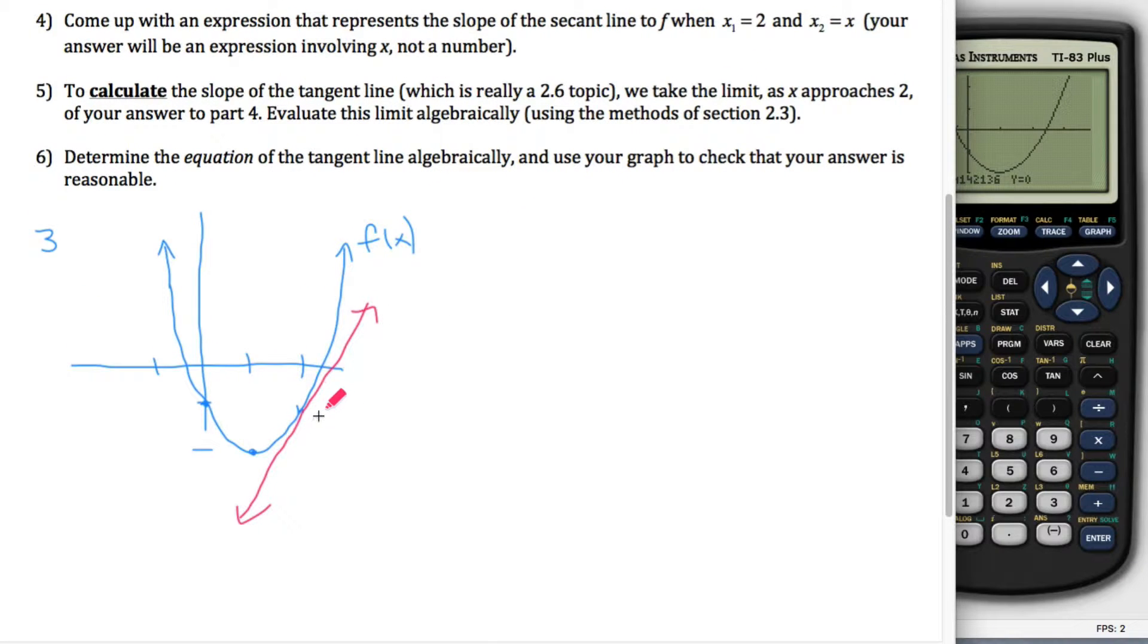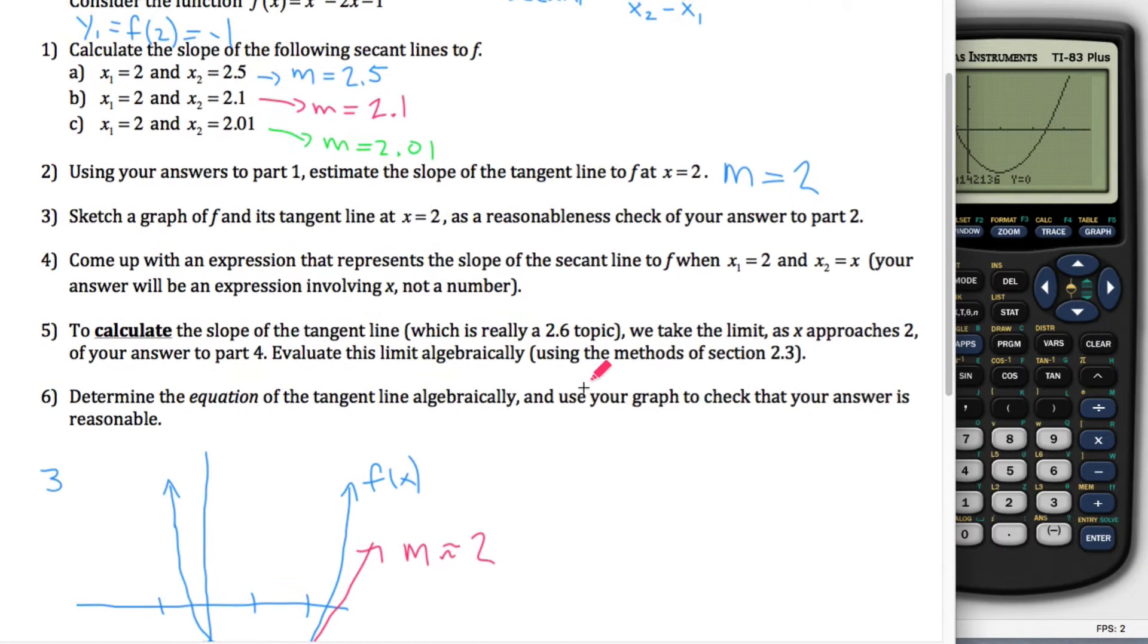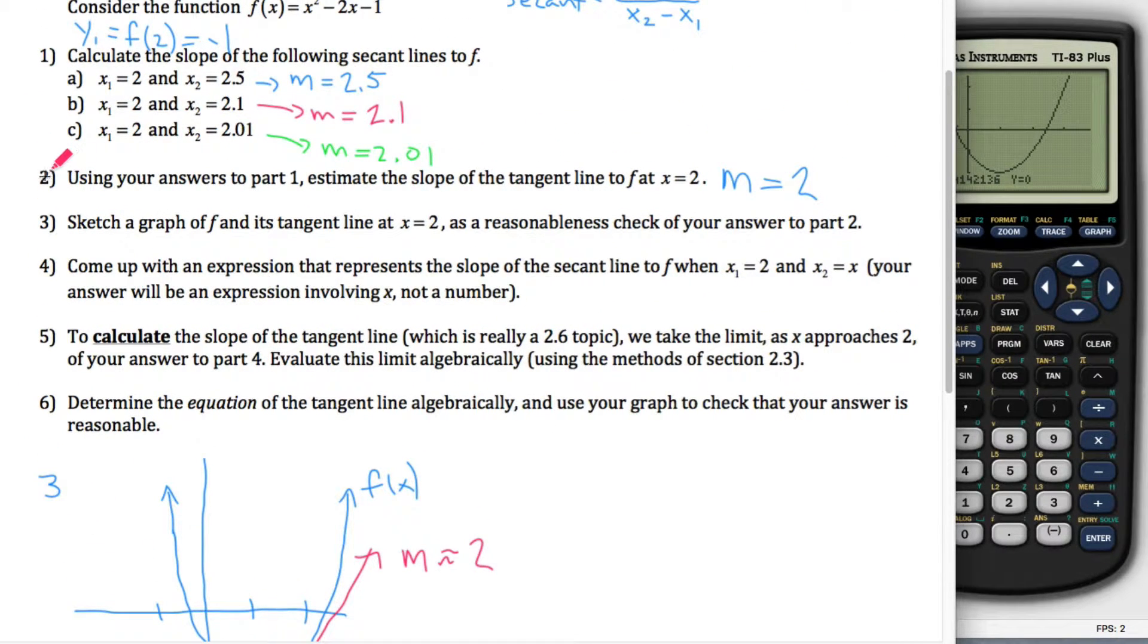And then I stare at this line and say, what's the slope of that line? Well, it's hard to tell in this picture, but it looks like the slope is approximately 2. It looks like this thing goes up about 2 every time it goes over 1. I'd buy that it's about 2. And that's a good thing because I estimated the slope to be 2 up here in part 2. So I think I'm done with part 3.